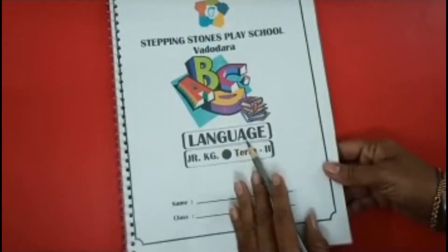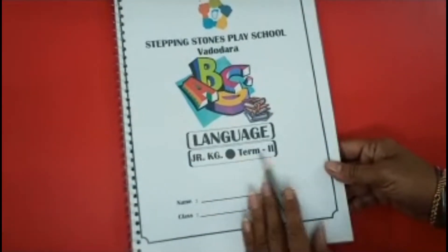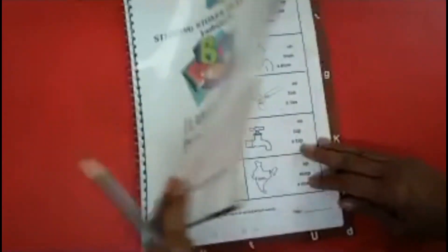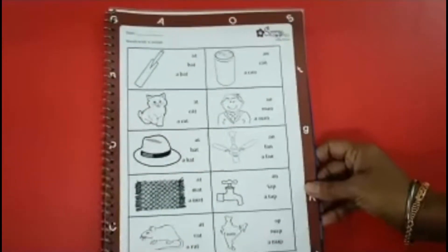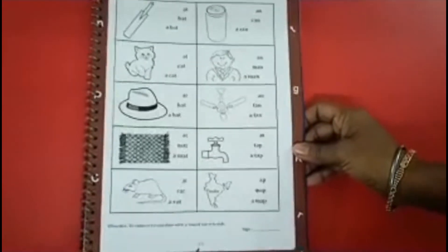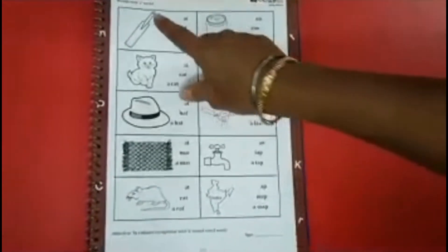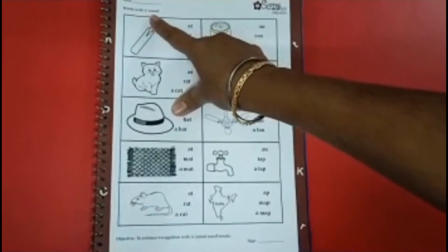See kids, this is our Language Term Book, Term Book 2. Now open this book and open page number 27. These are words with A-Sound.